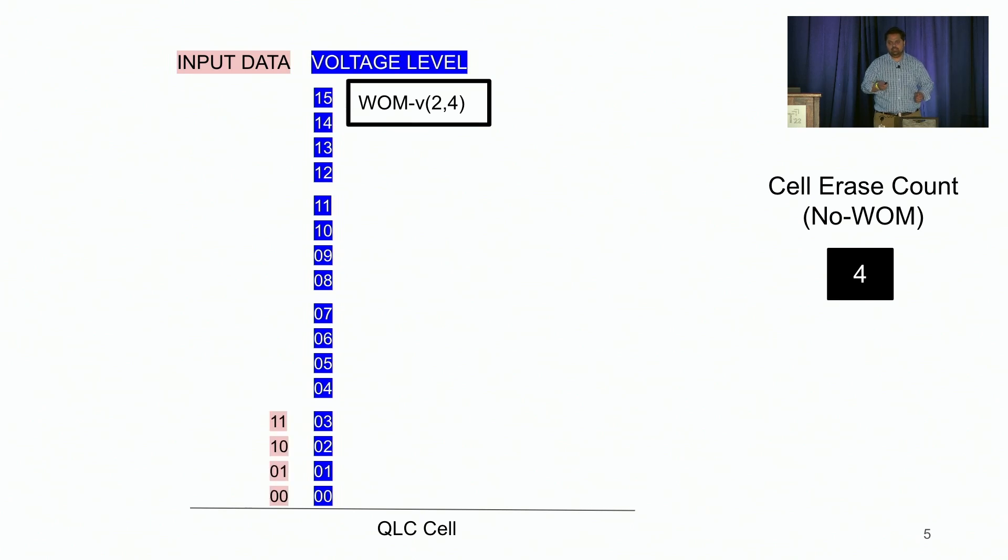On the first write, the first two bits of input data could assume four different values, shown here in the pink square boxes. Those are mapped to the first four voltage levels, and we call the first write to the underlying SSD a generation one write.